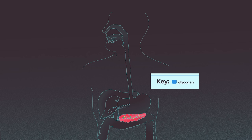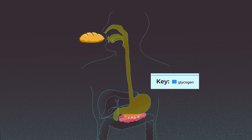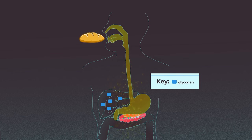glucagon will take the stored energy and bring it to the bloodstream to the cells that need it. After you eat a meal, specifically with carbohydrates, this carbohydrate is broken down into glucose, which will then be used for energy either immediately or stored in the liver and the muscle as glycogen.